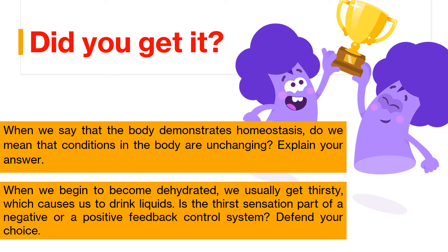The next question: when we begin to become dehydrated, we usually get thirsty, which causes us to drink liquids. Is the thirst sensation part of a negative or positive feedback control system? Thirst is part of a negative feedback system. Thirst causes us to drink fluids — the response — which in turn causes the thirst sensation to decrease and end. If it were positive feedback, we would become even more thirsty, increasing the stimulus for drinking. Because we don't feel thirsty after drinking water, it is an example of negative feedback.